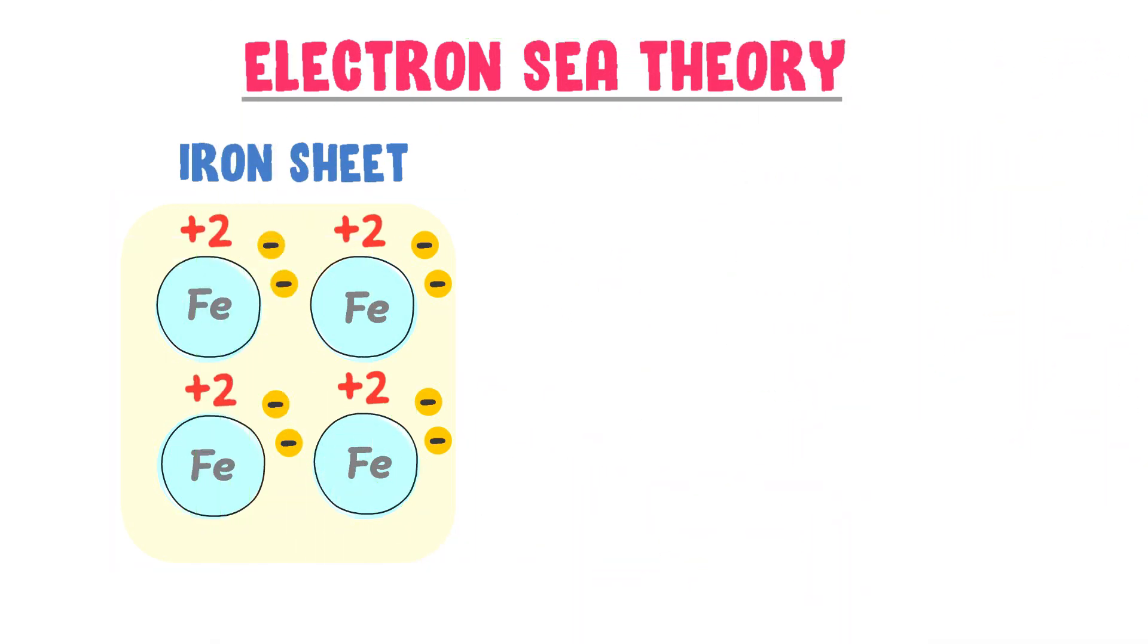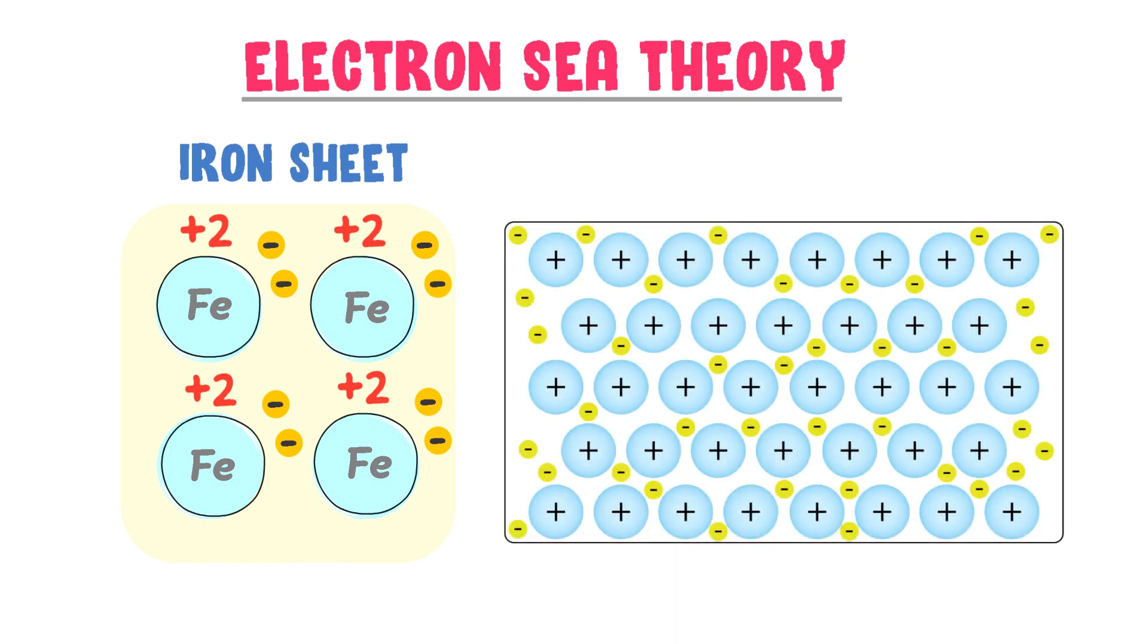So, the structure of iron sheet will be like this after losing electrons. The positive charge you see is the iron ion. And all these lost electrons will form a sea of electrons or clouds of electrons around these positive ions.